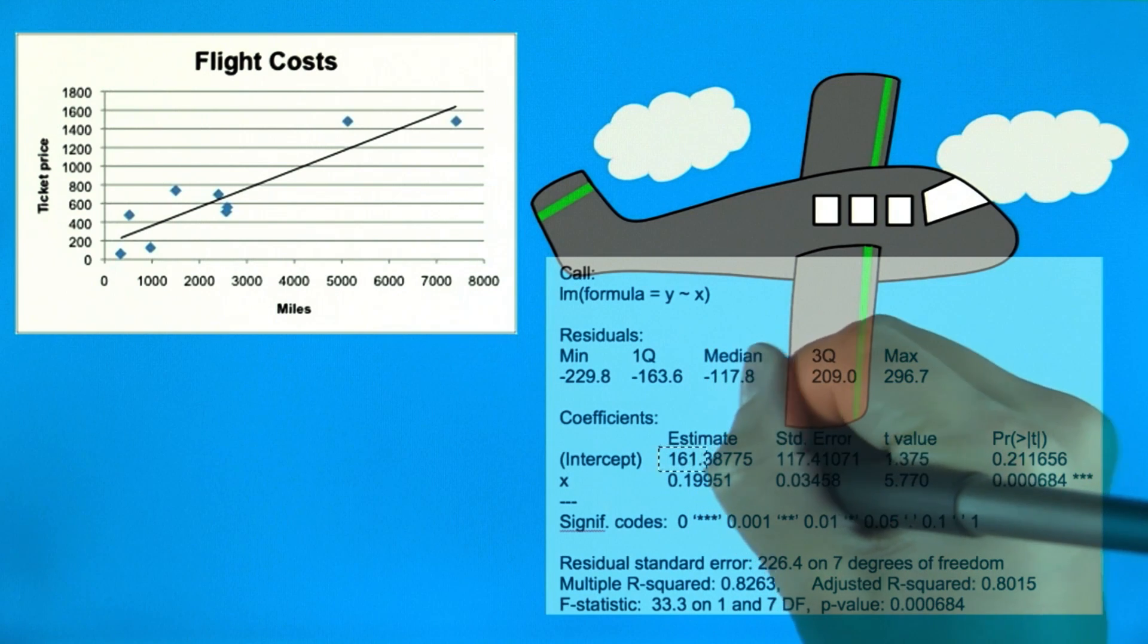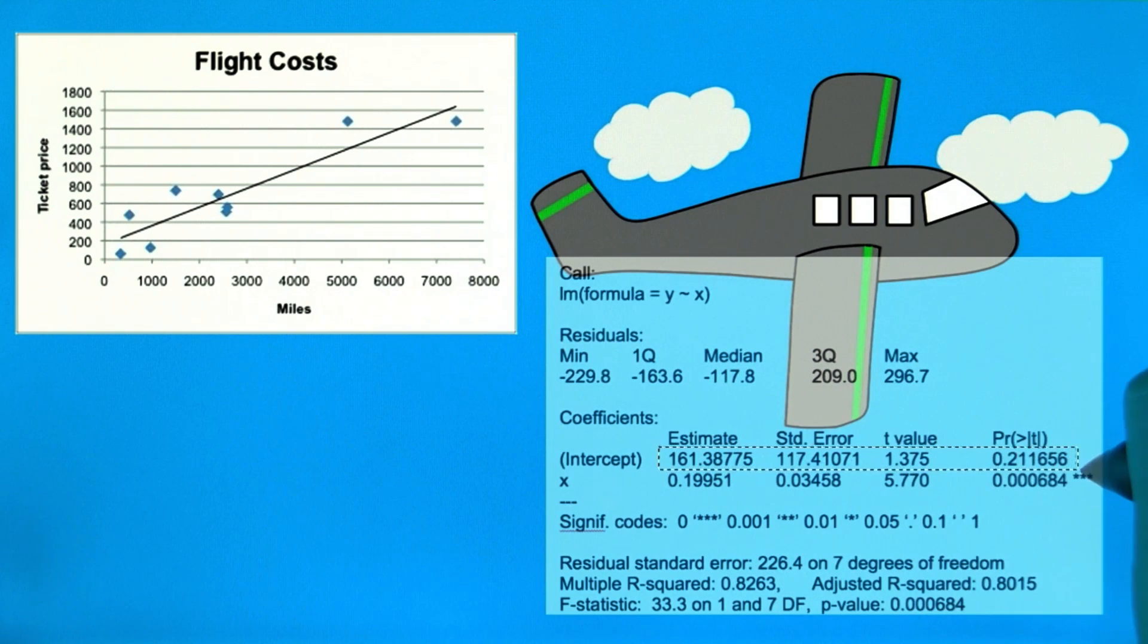Note that we can also conduct a hypothesis test on the y-intercept. And in this case, we see that it's not significant. The p-value is pretty high at 0.2, and there are no stars by it. This means that we're not totally sure that the true intercept is at 161.38775.